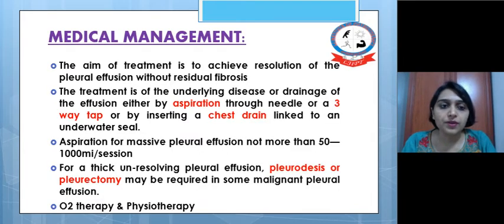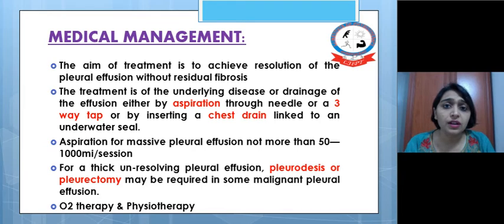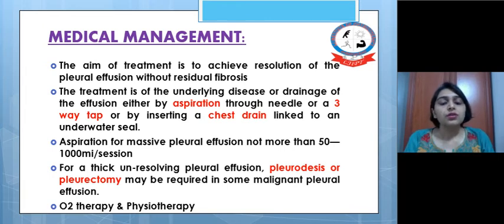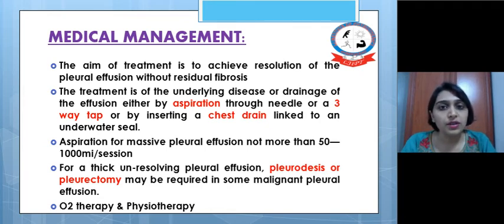Let's see the medical management. The aim of treatment is to achieve resolution of pleural effusion without residual fibrosis. In areas where lung expansion is not occurring properly, fibrosis may develop in the visceral pleura, preventing expansion even after resolution of the effusion. Medical treatment addresses the underlying disease or involves drainage either by aspiration through a needle or three-way tap, or by inserting a drain linked to an underwater seal. For massive pleural effusion, aspiration of not more than 500 to 1000 ml per session should be performed.